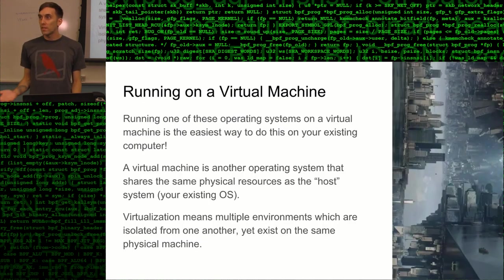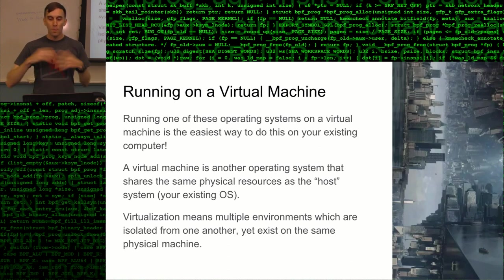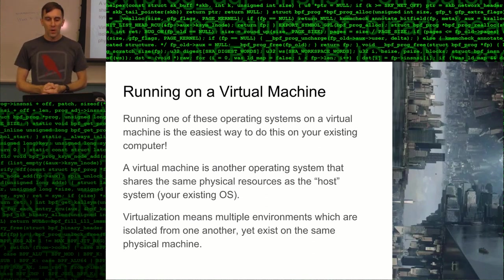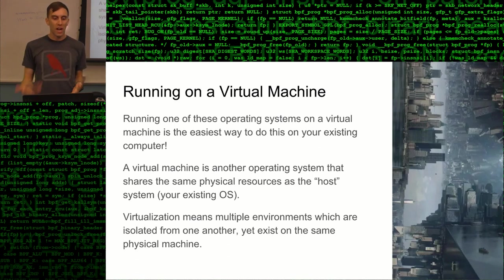So what are your options for actually running these distributions? The first and easiest option if you don't want to buy a new computer or create a new partition is to run it on a virtual machine. You can use a program like VirtualBox to take one of these images and run it within your computer, sharing actual hardware resources so that two different computer systems run at the same time on the same device.